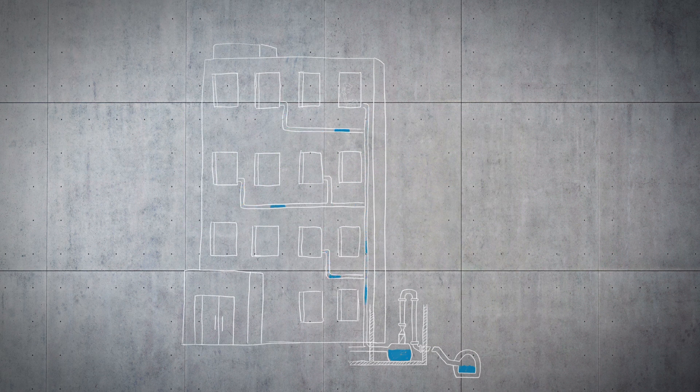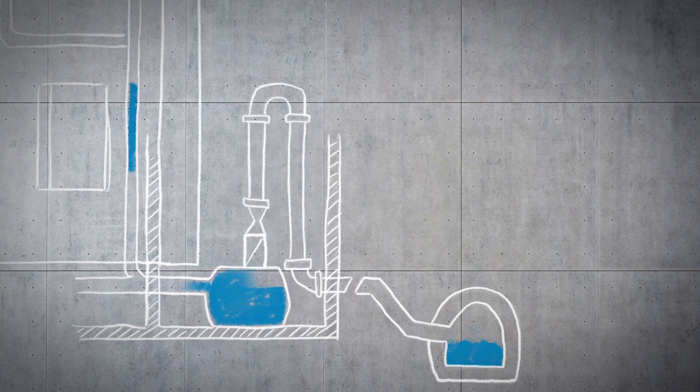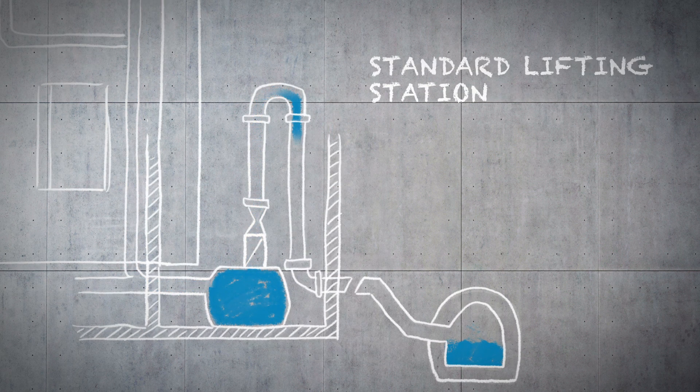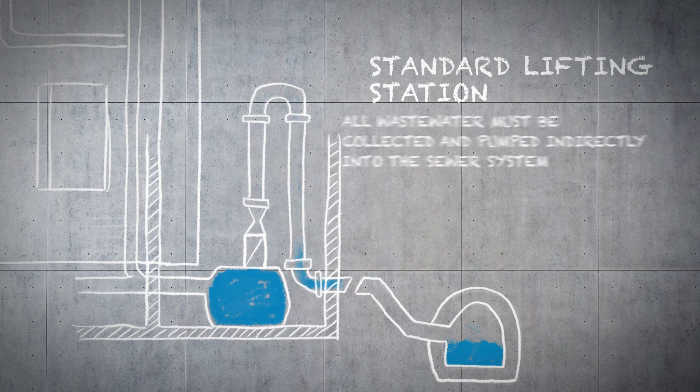Current regulations recommend a lifting station for the drainage of buildings even if natural gravity drainage is available. A lifting station is of course a must if the collected wastewater is below public sewer level and needs to be lifted to sewer level, hence the name lifting station.